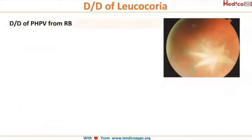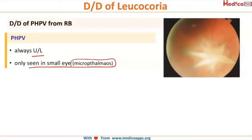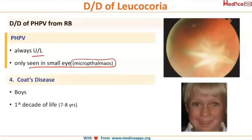To differentiate PHPV from retinoblastoma: PHPV is always unilateral and is only seen in a microphthalmic eye. Whenever the eye is very small, you must suspect PHPV and not retinoblastoma.